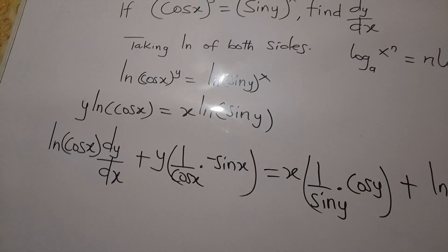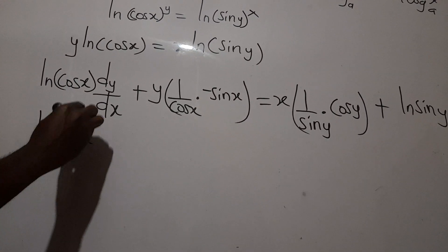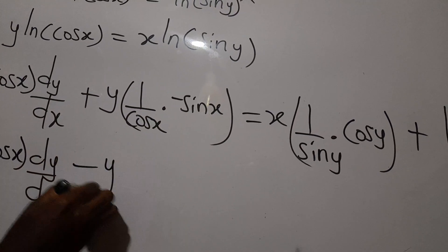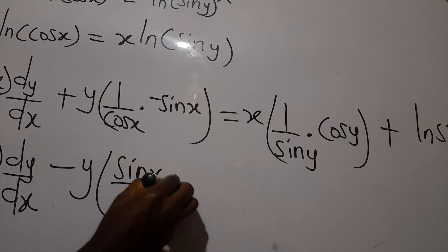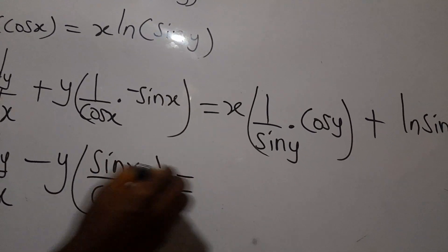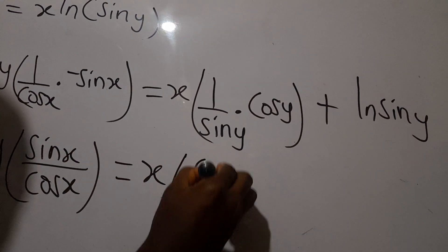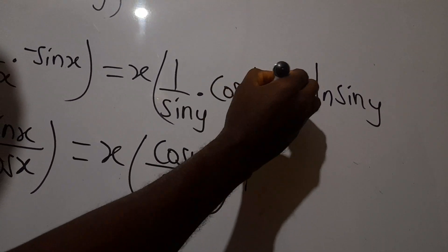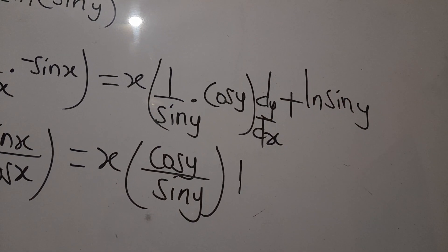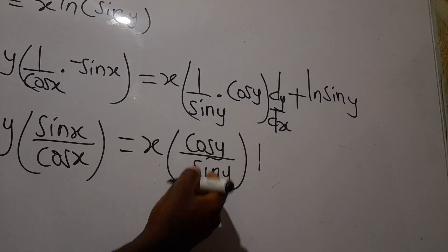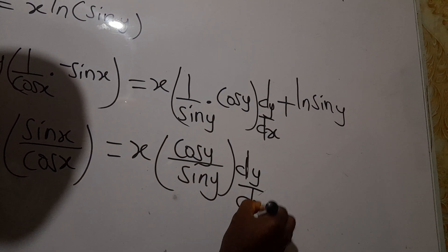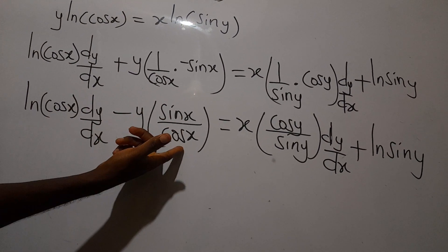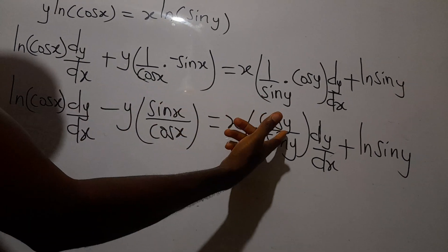Now let's clean this up. We have: ln(cos x)·dy/dx minus y·(sin x/cos x) equals x·(cos y/sin y)·dy/dx plus ln(sin y). Note that sin x/cos x is tan x, and cos y/sin y is cot y.